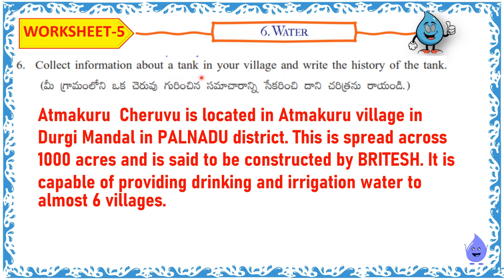Select information about a tank in your village and write the history of the tank. Atmakuru Cheruvu is located in Atmakuru village in Durgi Mandal in Palnadu district. It is spread across 1,000 acres and is said to have been constructed by the British. It is capable of providing drinking and irrigation water to almost 6 villages.